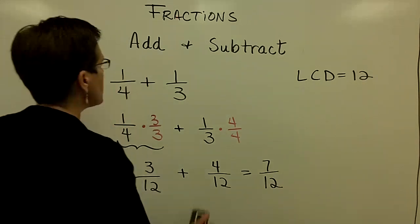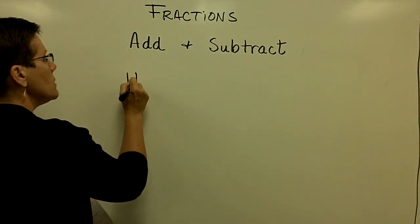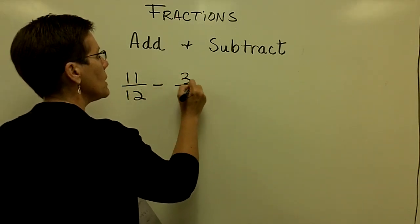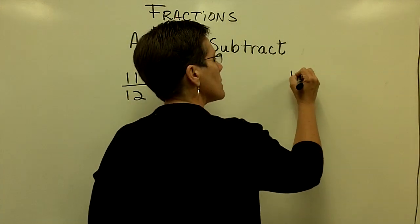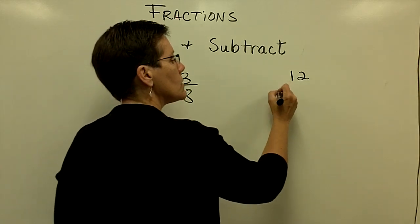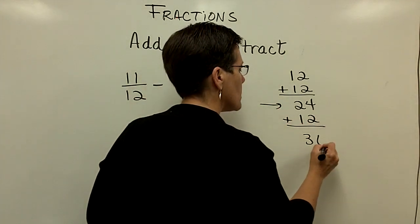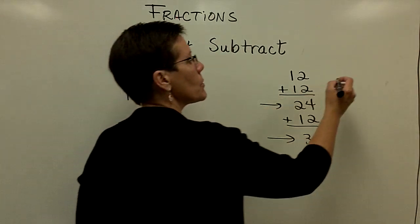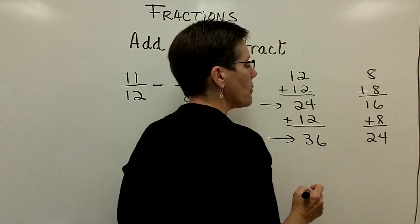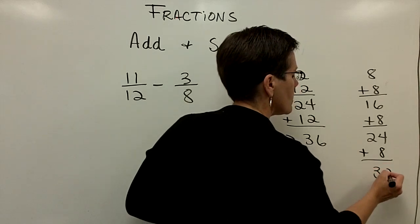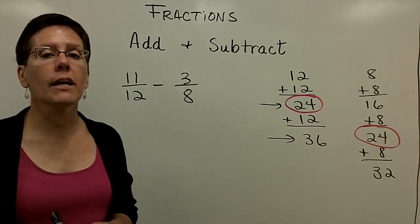Likewise, if I were to subtract fractions, I would have to get a common denominator as well. The fraction I'd like to look at now is 11 twelfths minus 3 eighths. Another way to find a common denominator is to list multiples: take 12 and add 12 to get 24, then 36. Do the same with 8: add 8 to get 16, then 24, then 32. What you're looking for is a shared common multiple — in this case, that multiple is 24.